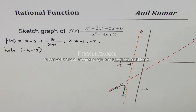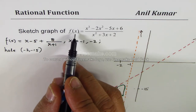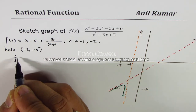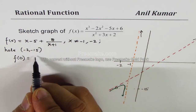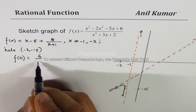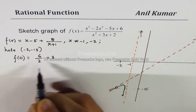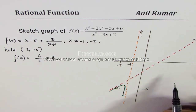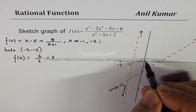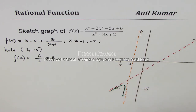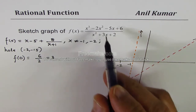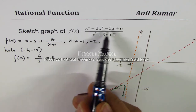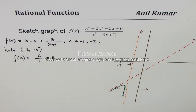Now let's find the x and y intercepts. The y-intercept is simple: substituting x = 0 gives 6 divided by 2, which equals 3. So the y-intercept is at y = 3.